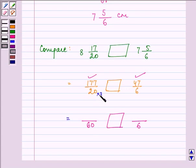So that means 20 into 3, we know is 60, so 177 into 3 is 531 by 60 and 6 into 10 gives us 60, so we have 47 into 10 as 470 by 60.